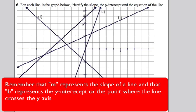We're asked to identify the slope, y-intercept, and equation of a line for each of these graphs. For the first graph, A, the y-intercept is 5, so b equals 5.